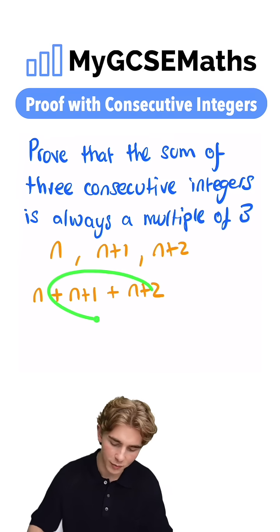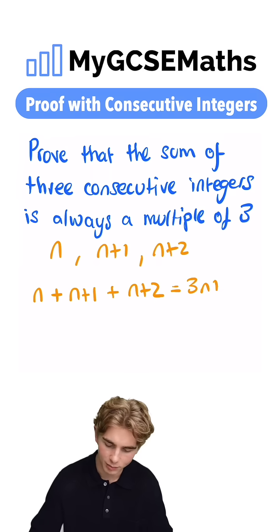Now, how can we simplify this? If we collect our like terms, we can write this as three n plus three.